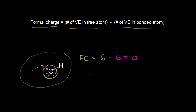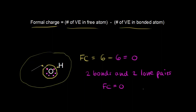Let me write down this pattern we've just seen. When oxygen has two bonds and two lone pairs of electrons, the formal charge is equal to zero. Sometimes the lone pairs are just left off for convenience — so you could draw this with oxygen and hydrogen with the lone pairs shown, or leave them off. All of those are just different ways of representing the same molecule.